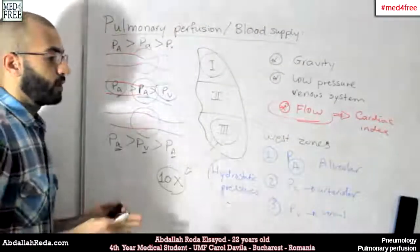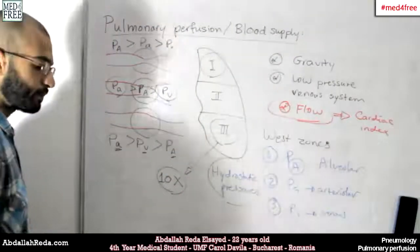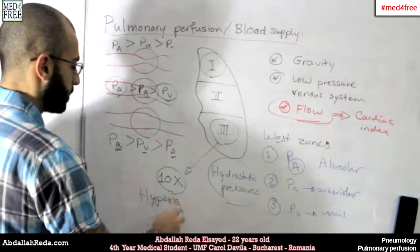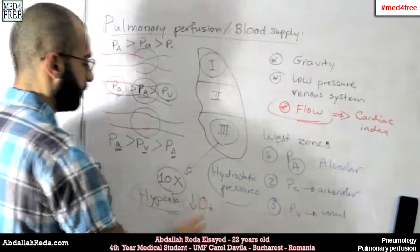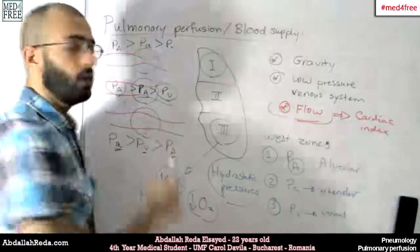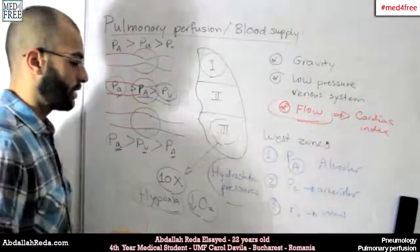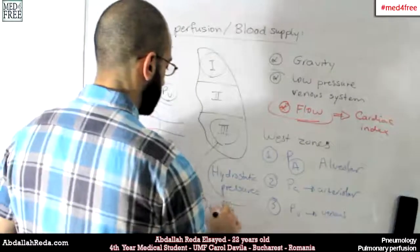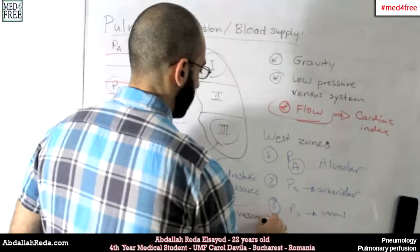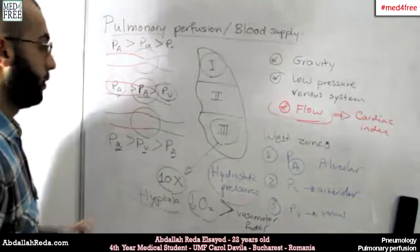The factors that affect lung perfusion — the most important one is hypoxia, meaning low oxygen in the alveoli. Hypoxia affects lung perfusion more than any vasomotor factors, making it the most significant factor compared to other vasomotor factors affecting lung perfusion.